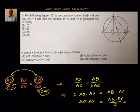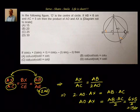AB is 6 and AC is 5, so AO × AX = 6 × 5 ÷ 2 = 15 square centimetres. The correct option is option A, which is equal to 15 centimetres squared.